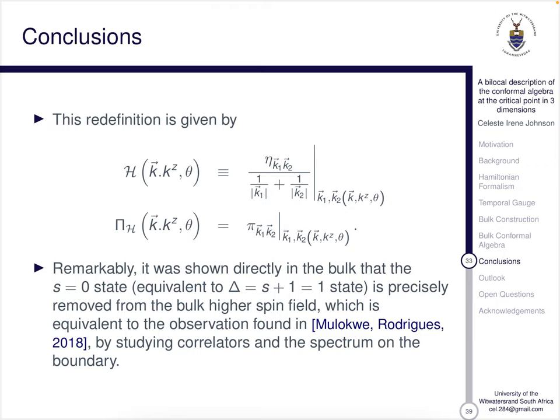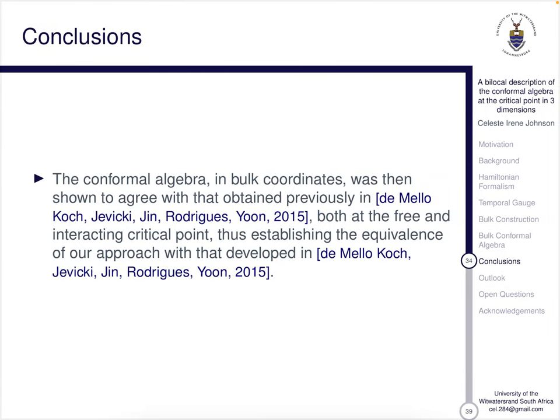And remarkably, it was shown in the bulk that the s equals 0 state equivalent to the delta equals s plus 1 equals 1 state is precisely removed from the bulk higher spin field, which is equivalent to what we found in the Klebenov-Polyakov paper in 2002, as well as what was found by Malokwe and Rodrigues in 2018. And lastly, the conformal algebra in bulk coordinates was shown to agree with that obtained previously in the paper by Giombi, Klebanov, Yin, Rodrigues, and Yoon in 2015, both at the free and interacting critical point, which established the equivalence of our approach with that developed in the 2015 paper.